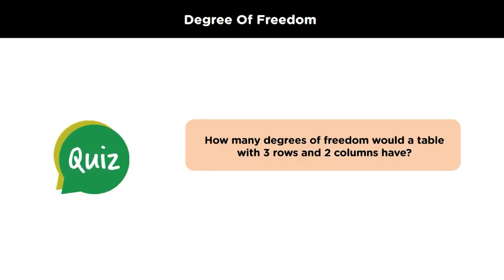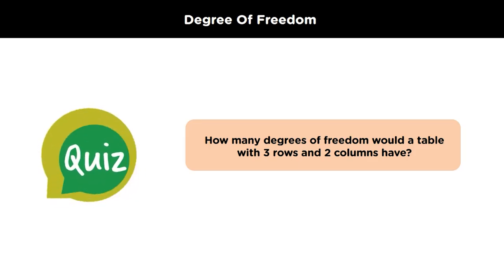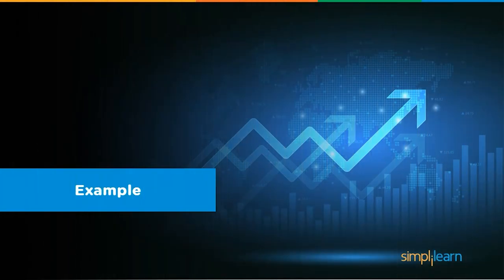After knowing the formula, we have a question for you. How many degrees of freedom would a table with three rows and two columns would have? Post your answers in the comment section. Now that we have learnt all the theoretical concepts regarding chi-square test, let's understand this more clearly with the help of an example.